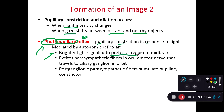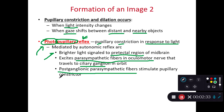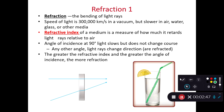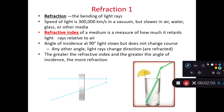In this autonomic reflex arc, bright lights signal the pretectal region of the midbrain. This will excite the parasympathetic fibers in our oculomotor nerve, which then travel to the ciliary ganglion within the orbit, causing the post-ganglionic parasympathetic fibers to constrict the pupil. This is a defense mechanism — if we get too much or too bright a light into our eye, we have our vision washed out and can have potential damage to the retina.